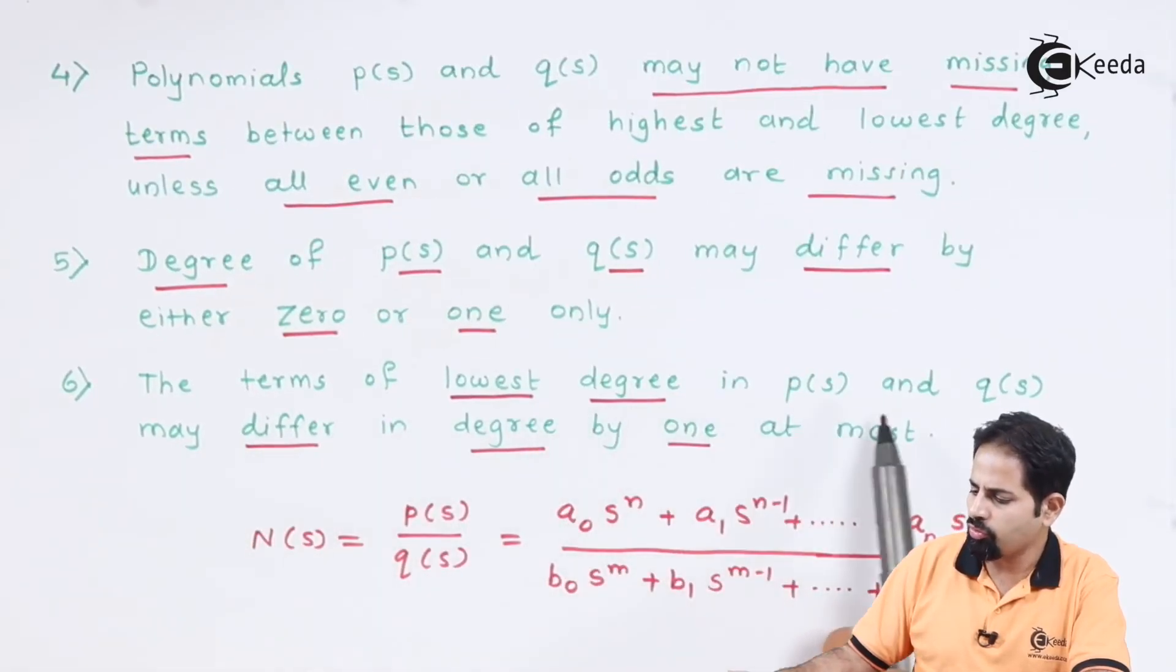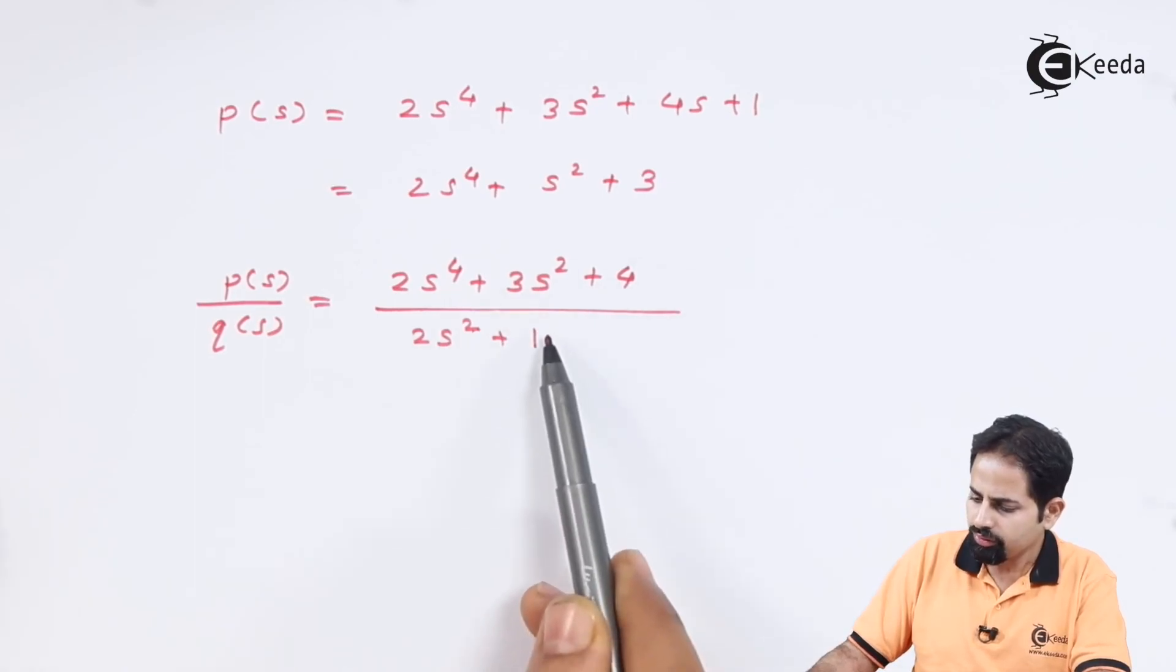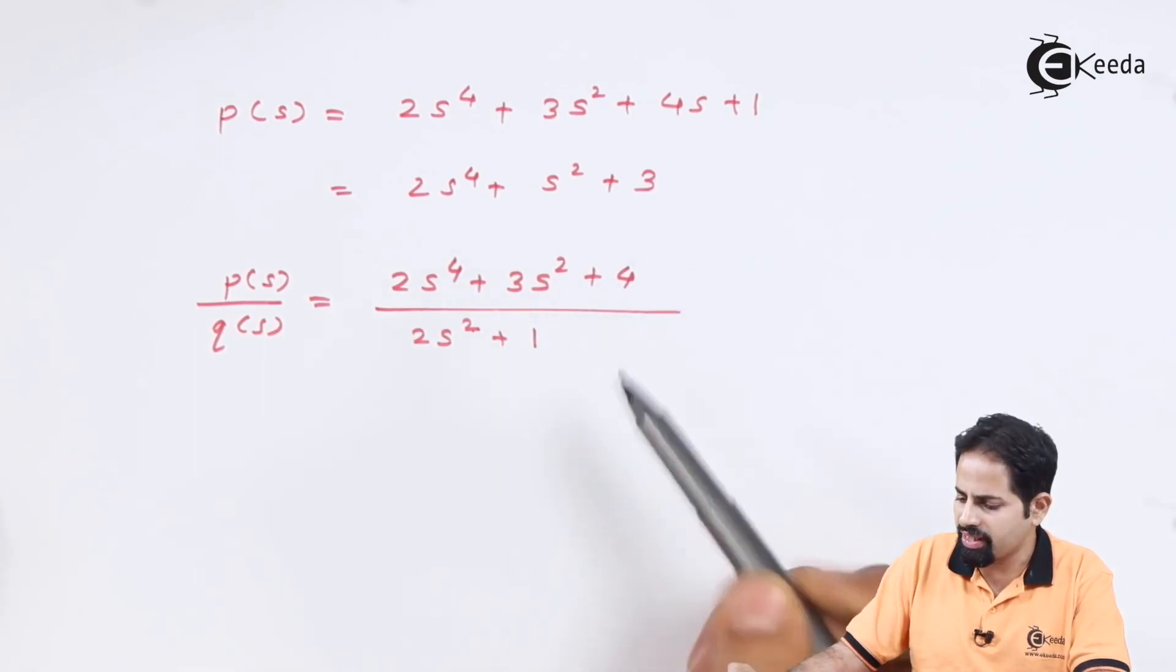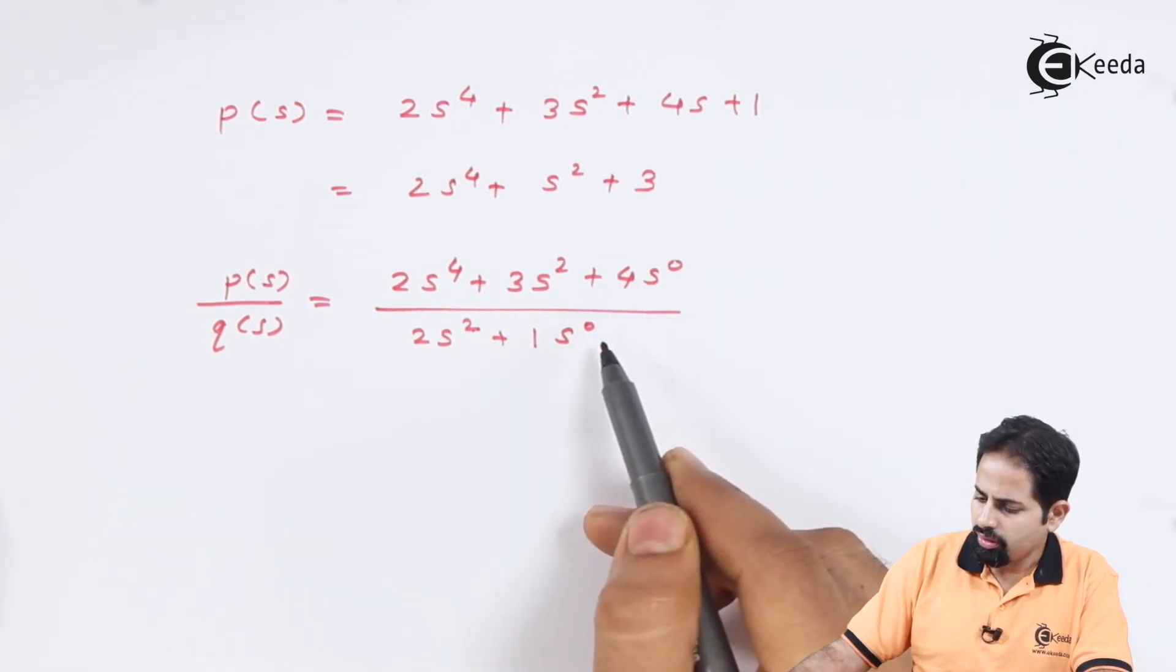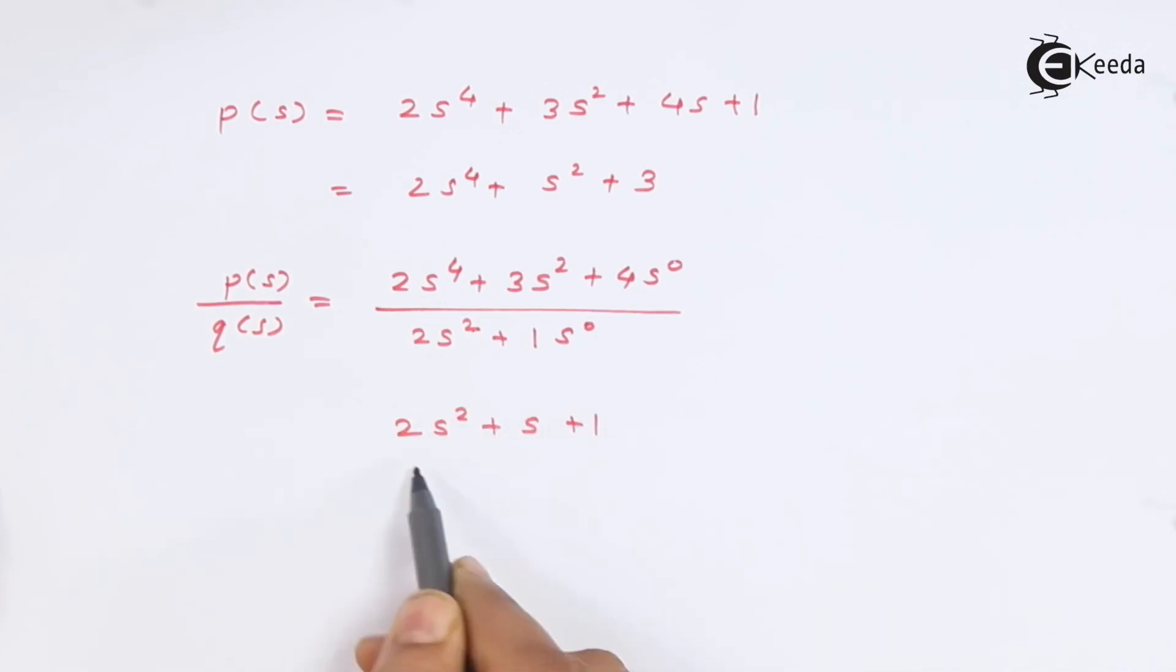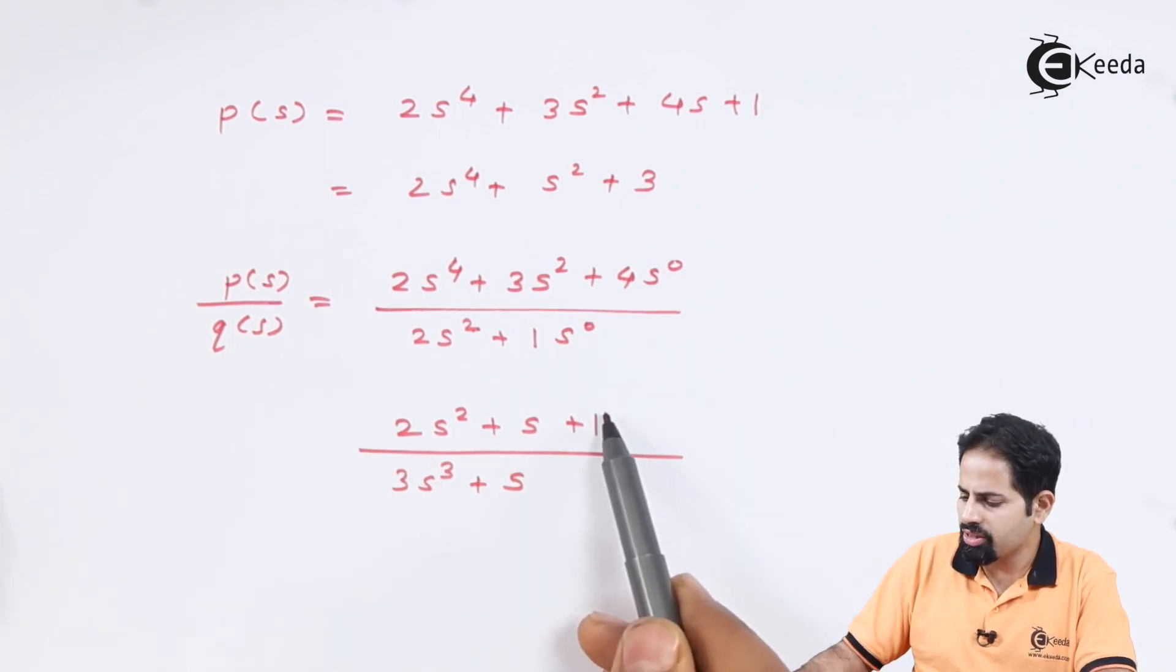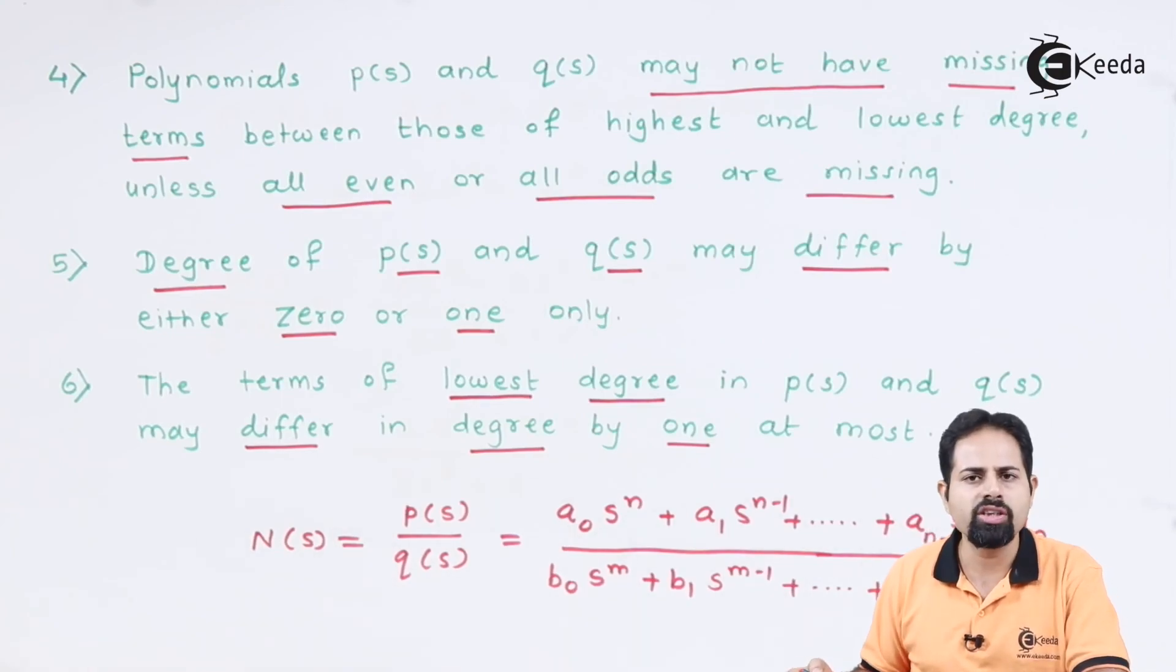And the last rule is the terms of lowest degree in P of S and Q of S may differ in degree by one at most. So the lowest degree here it is zero. Here also it is zero because it is S rest to zero. Here also it is S rest to zero. And this is allowed because they are differing only by zero. Suppose the polynomial was like this. So here lowest degree is zero and here lowest degree is one. So that is allowed. So this is how the rule six was defined.